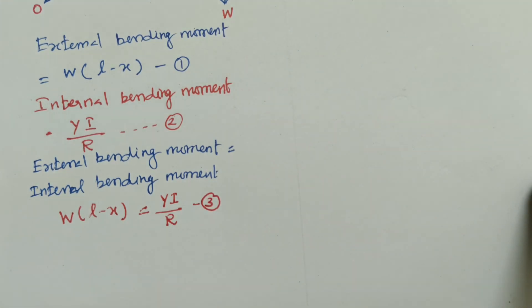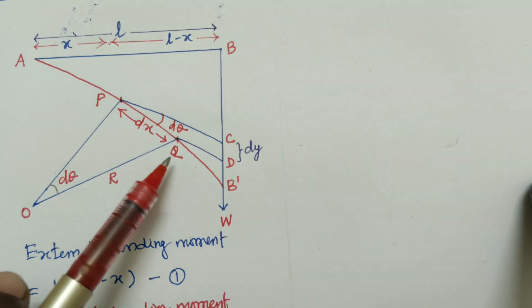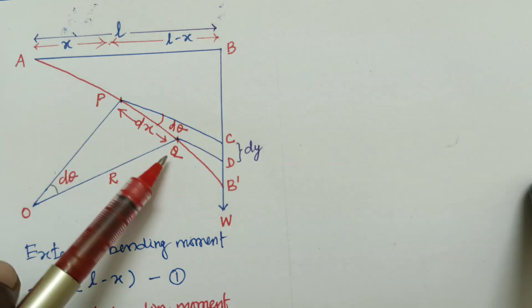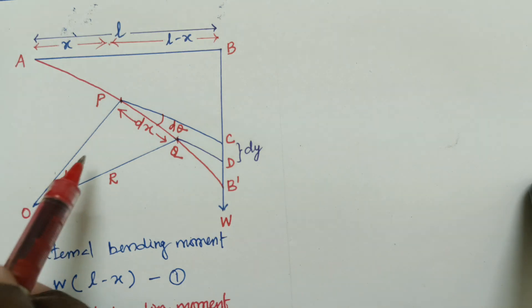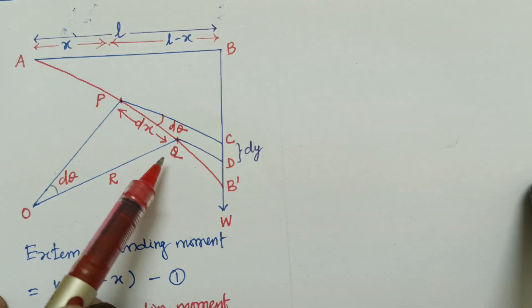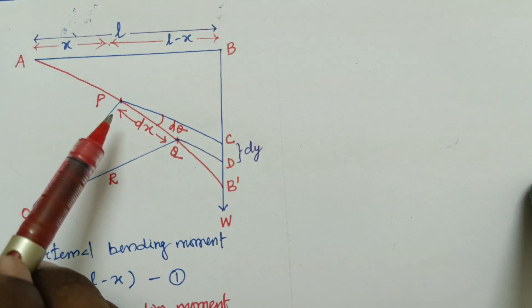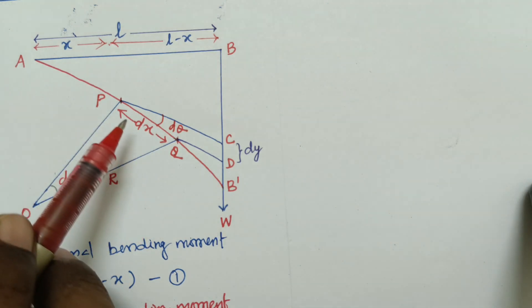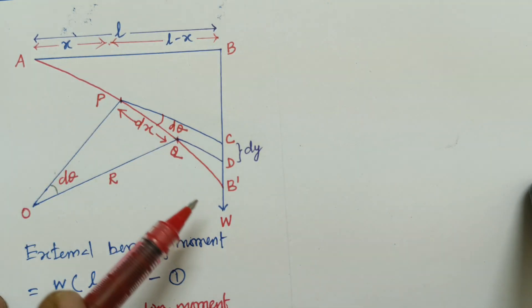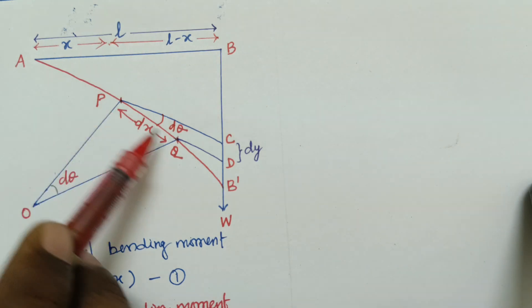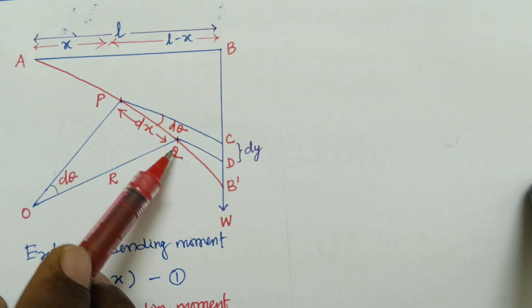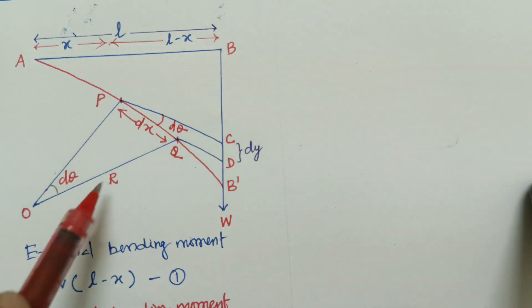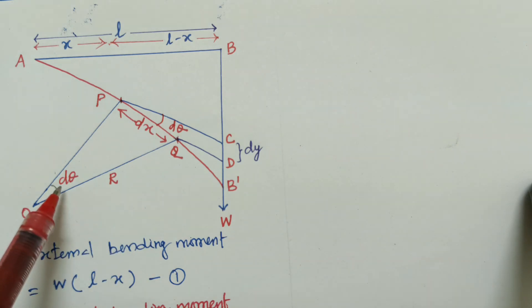Now let us consider from the figure another point Q at a distance dx from P. P to Q is dx. Why we are taking the values of P and Q is because the beam contains N number of layers. So we are applying some external force acting on the body, and the bending moment inside the material is at different positions — the first one is P, another one is Q. The angle between P and Q is d-theta.